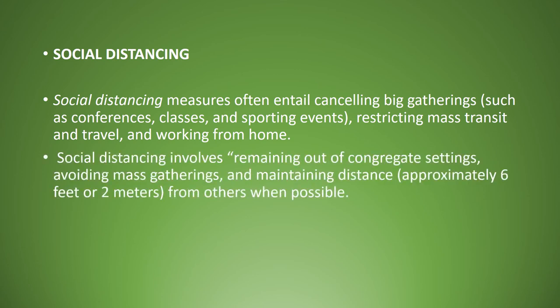Social Distancing involves remaining out of congregate settings. Social Distancing लोगों को भीड़भाड़ करने से रोकता है and avoiding mass gatherings and maintaining distance — एक दूसरे से दूरी बनाने को कहता है. Approximately 6 feet or 2 meter — 6 foot या 2 meter की, when possible, जहां तक हो सके. यह सारी हिदायतें तब दी जाती हैं जब कोई बीमारी जो एक दूसरे के संपर्क में आने से फैलती है, उसको रोकने के लिए isolation, quarantine और social distancing का प्रयोग किया जाता है.